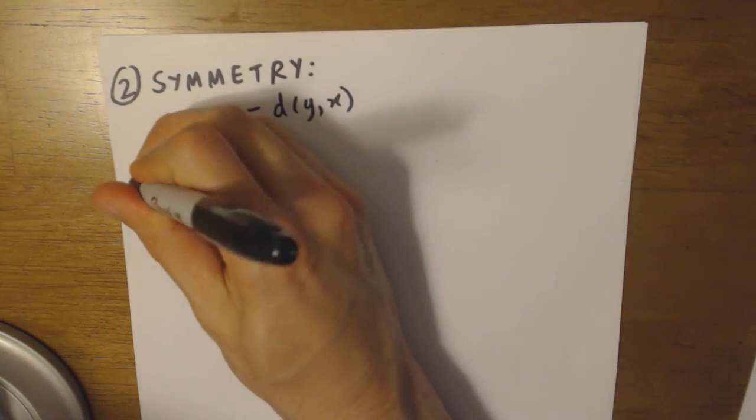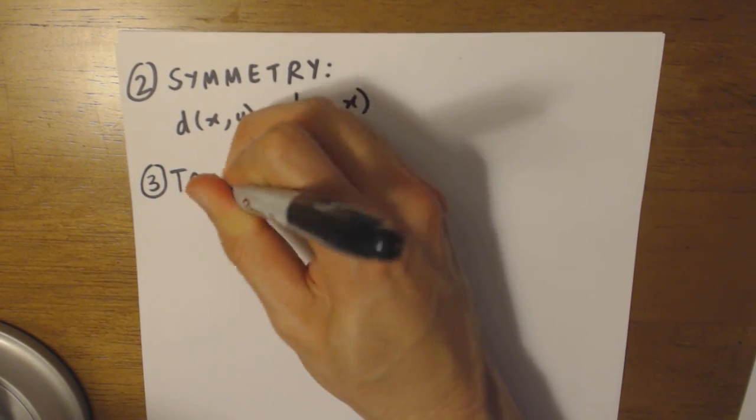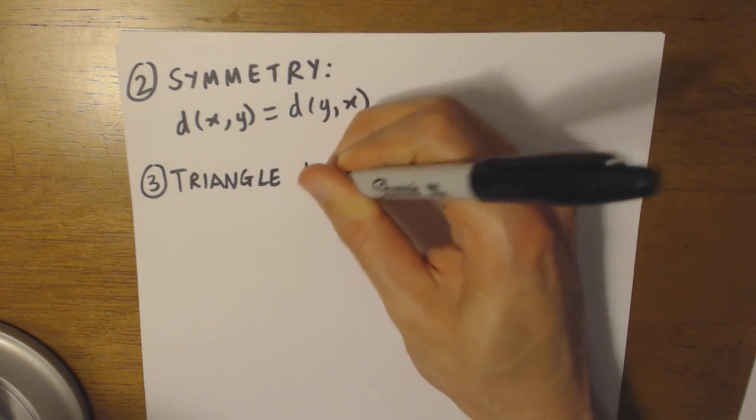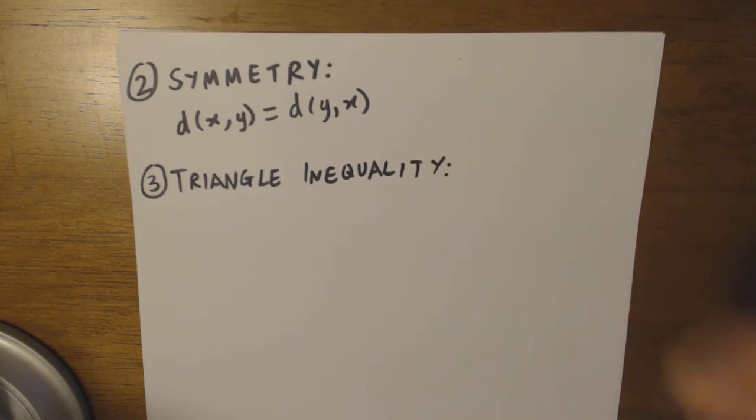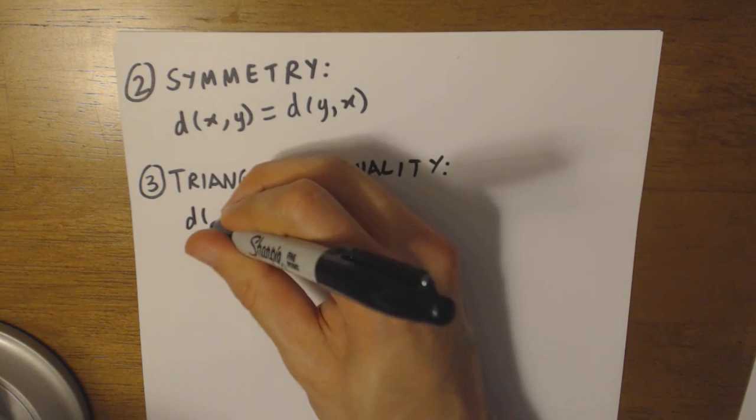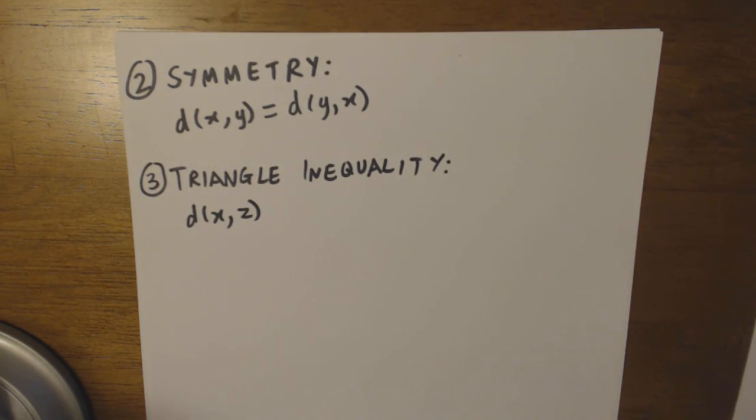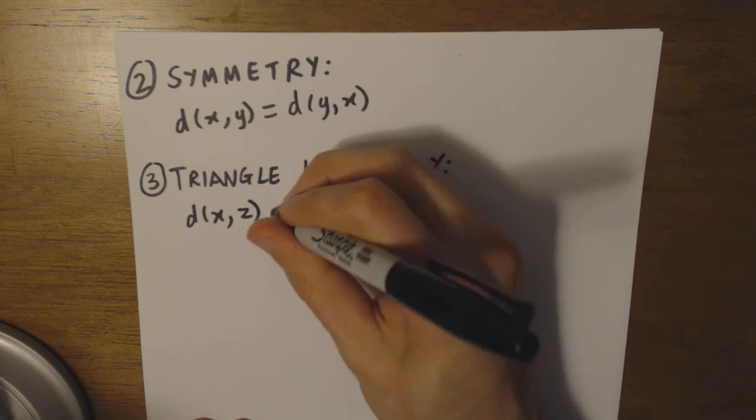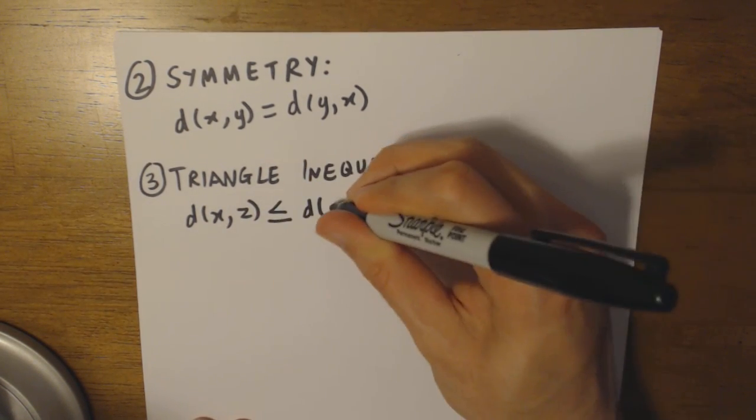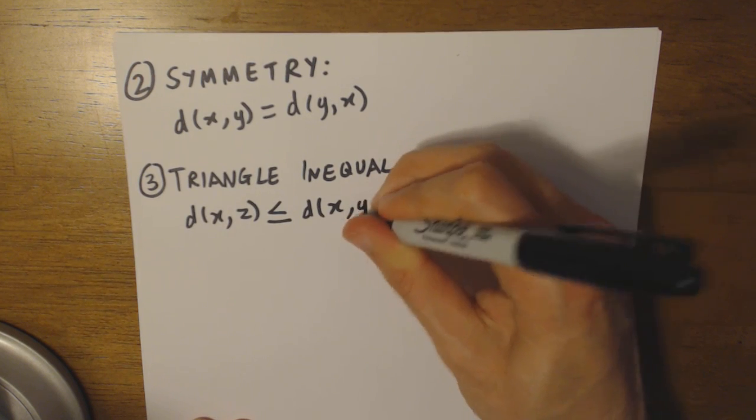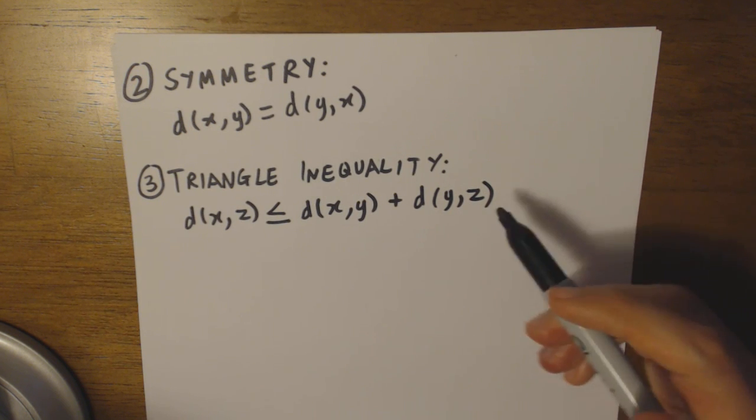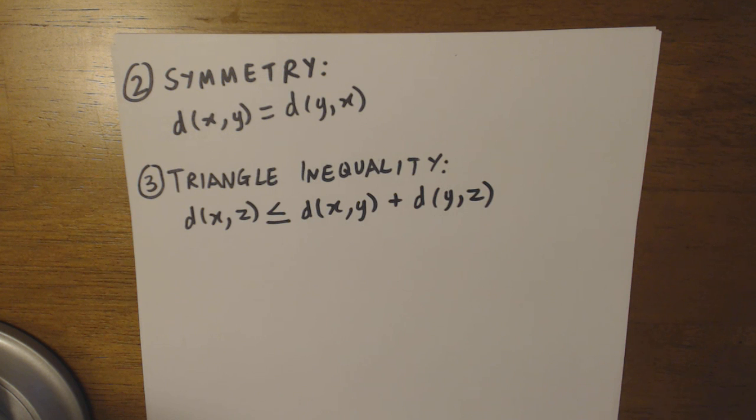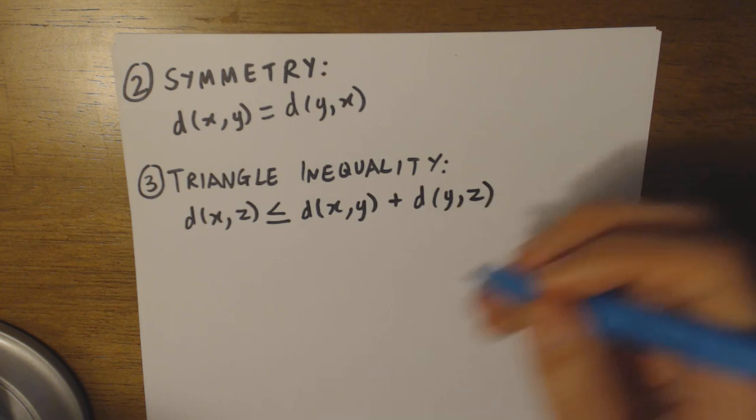Condition number three is what we call the triangle inequality, which is a little bit more challenging but not too complicated. Here we have that d, the distance between any two points x and z, must be less than or equal to the distance between any points x and y and any point y and z. So y is some intermediary point between x and z.